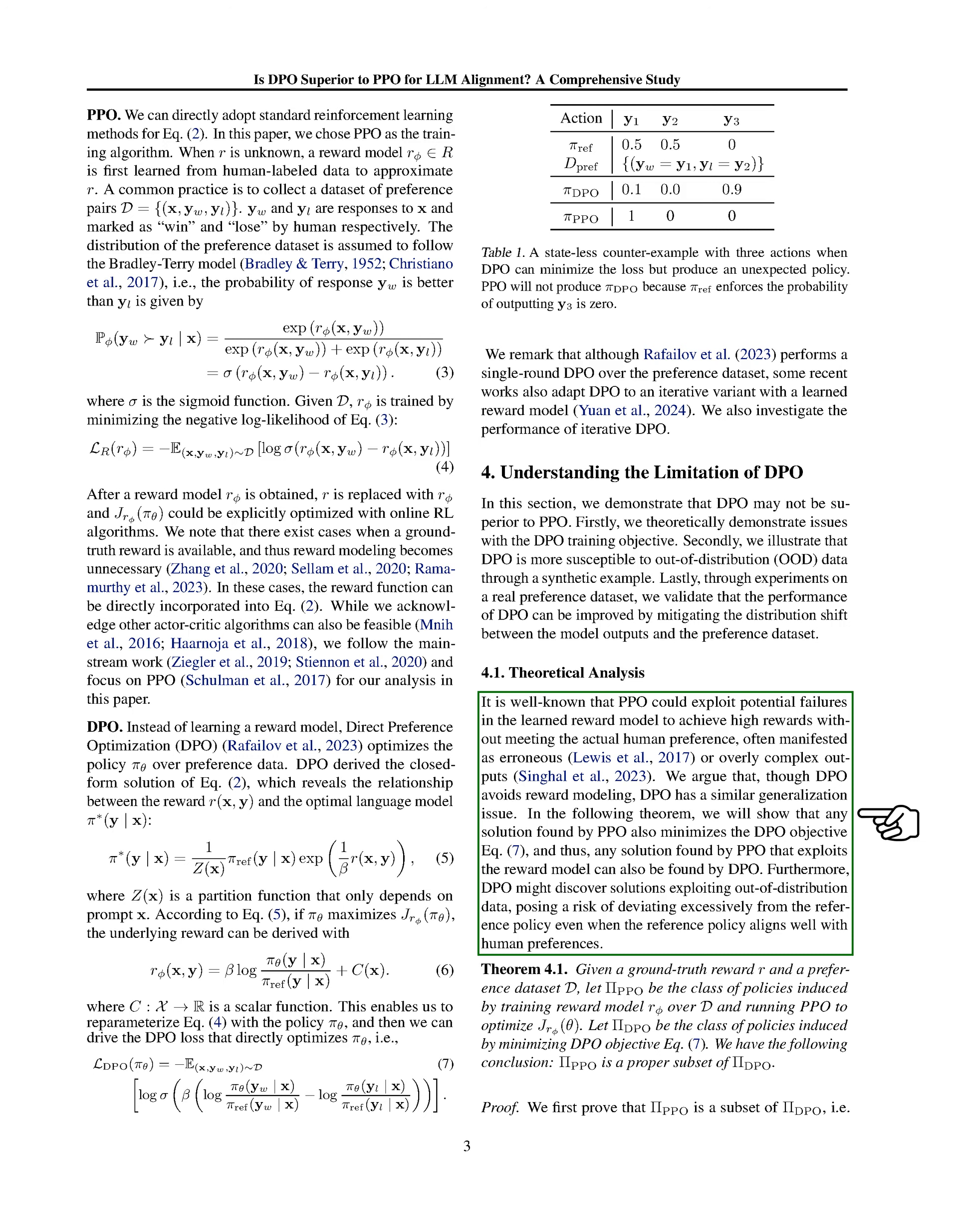often resulting in incorrect or overly complex outputs. We argue that even though DPO avoids using a reward model, it faces a similar problem with generalization. We will prove a theorem that shows any solution found by PPO to minimize the reward also minimizes the DPO objective.